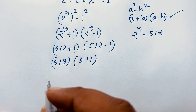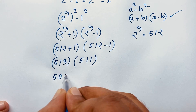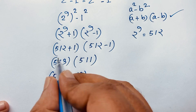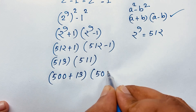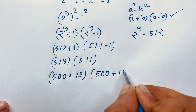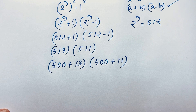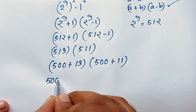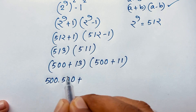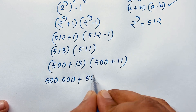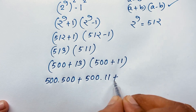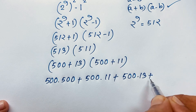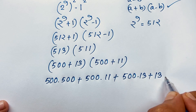Now at this moment, you can see this value. It will be 500 plus 13. We know that 500 plus 13 is 513, and it is 500 plus 11. So this time it will be 500 times 500, plus 500 times 11, plus 500 times 13, plus 13 times 11.